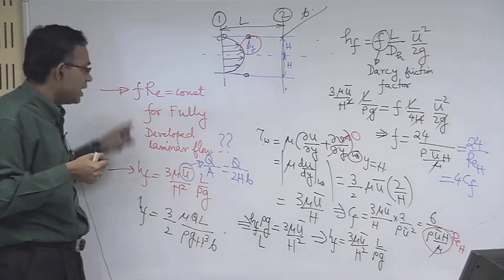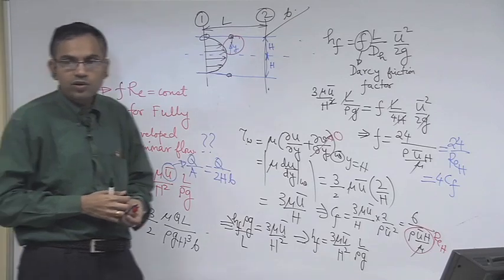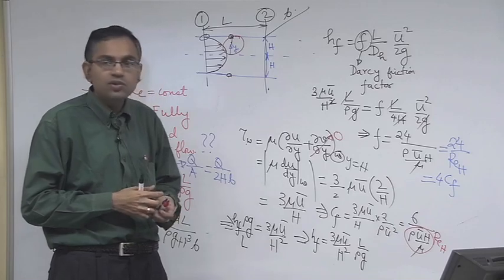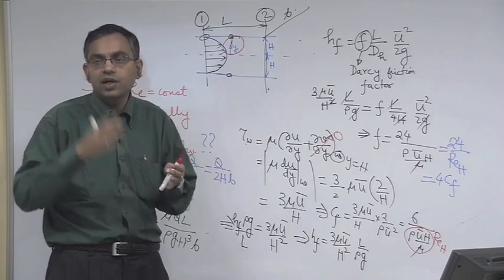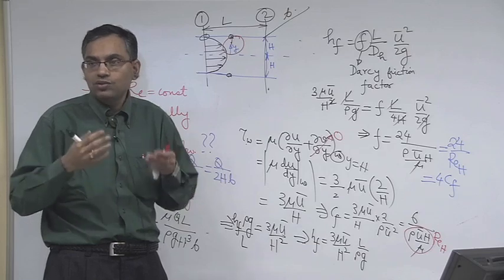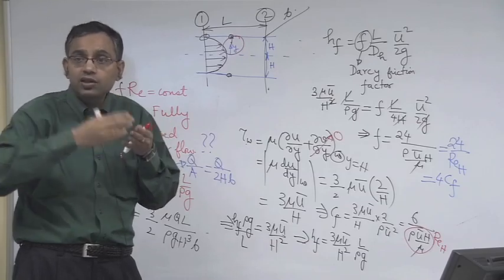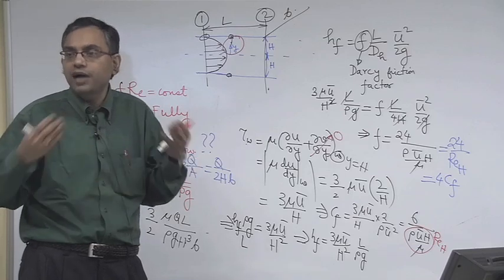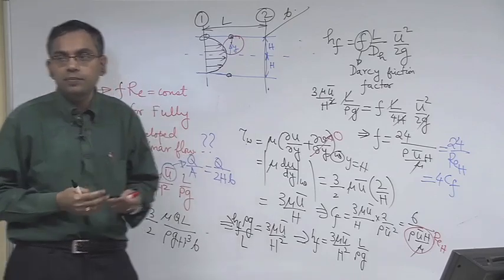So these are the two important points to keep in mind as we proceed further. In the next lecture, we will discuss the case where the channel width is finite or comparable with the height — a two-dimensional velocity profile where u varies with both y and z. We will find the velocity profile, friction coefficient, and related quantities for that geometry. Thank you.